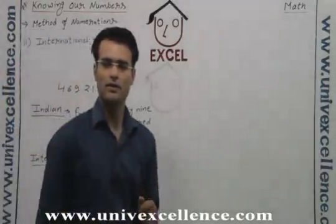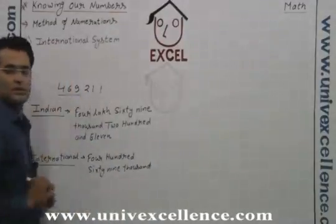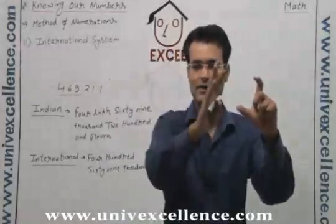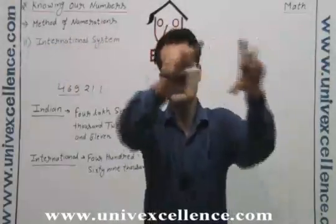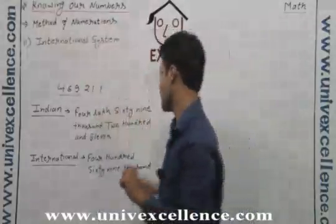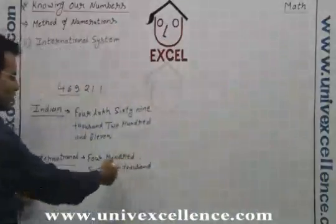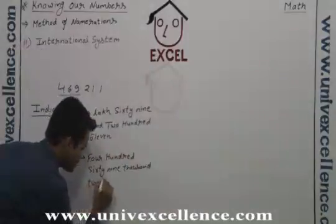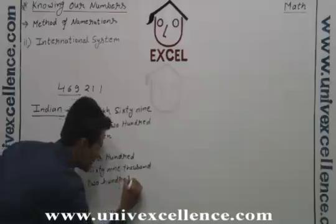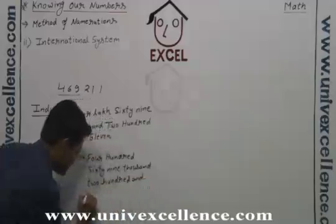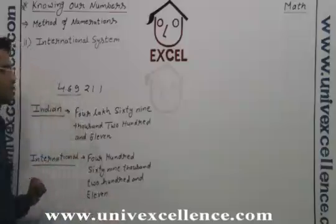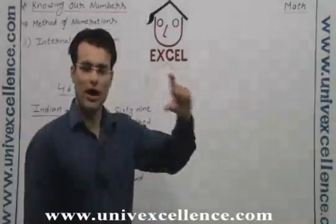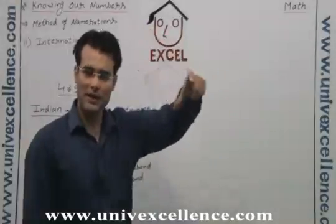If there are three thousands in a number — one thousand, ten thousand, hundred thousand — you say them together. So say it as: four hundred sixty-nine thousand. Then you have two hundred and eleven. So the full number is four hundred sixty-nine thousand, two hundred and eleven. This is the number in the international system.